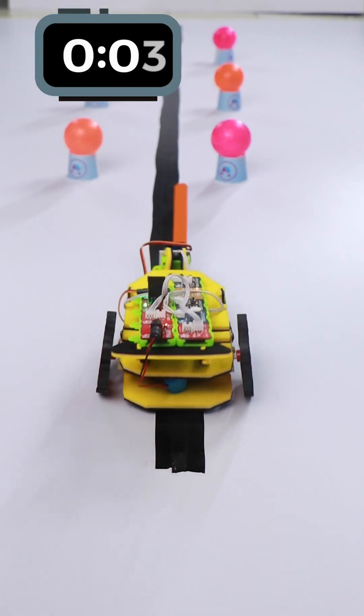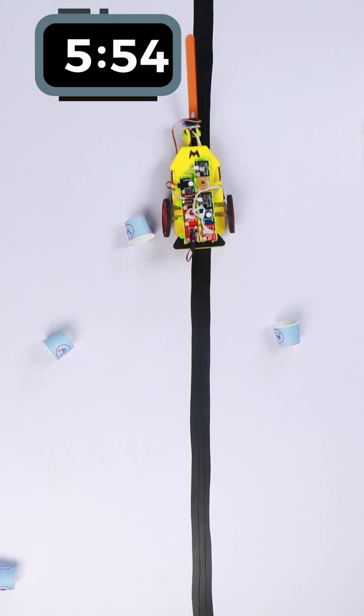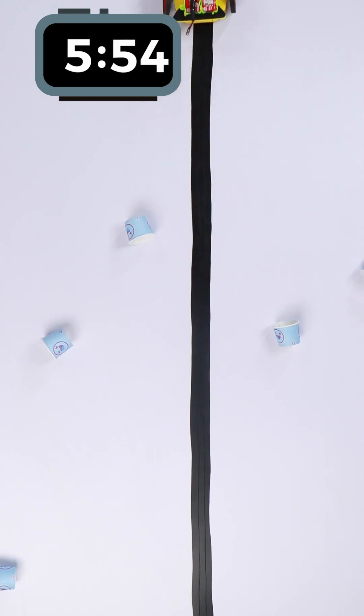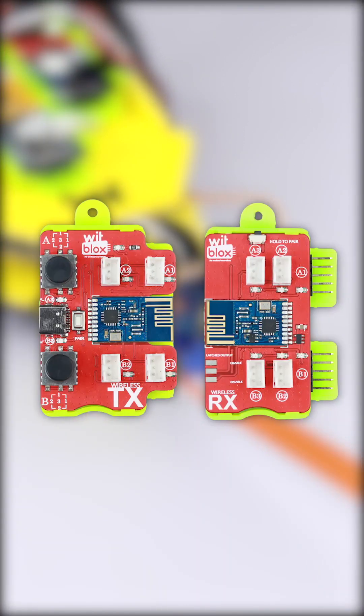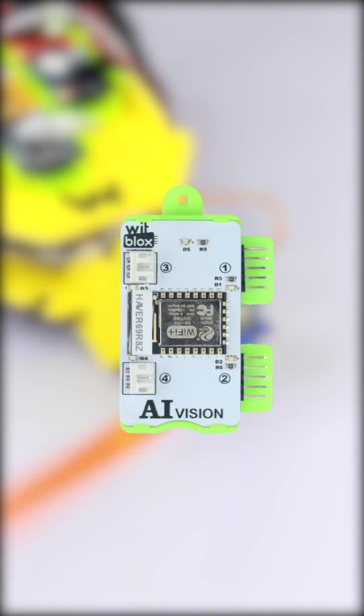The timer starts when you turn on the power and stops when you kick off the last ball. To make the mechanism for kicking the ball, you can either use a remote control mechanism or a sensor-based mechanism.